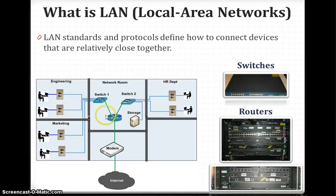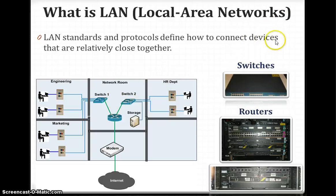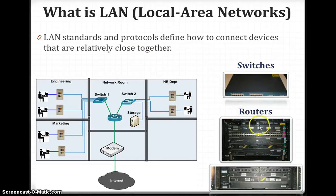They are all very close together in one building — that is the local area network. Now, if one building is in California and another building is in Atlanta, when those two buildings are connected with each other, that is called a wide area network. So LAN, as shown here, is the local area network.